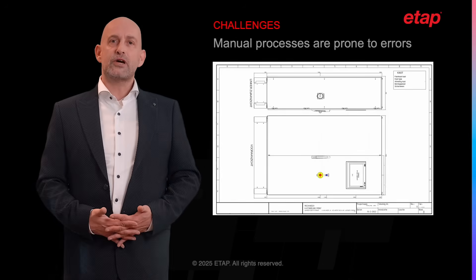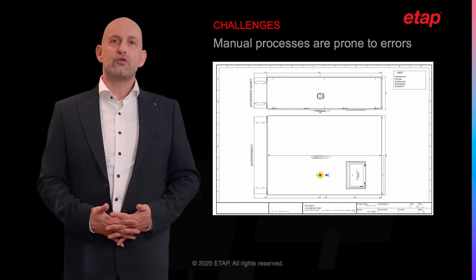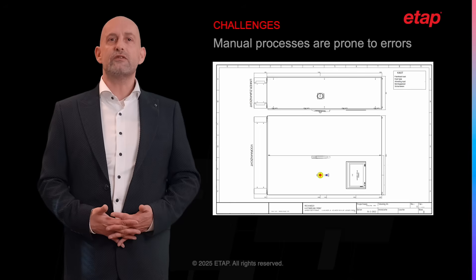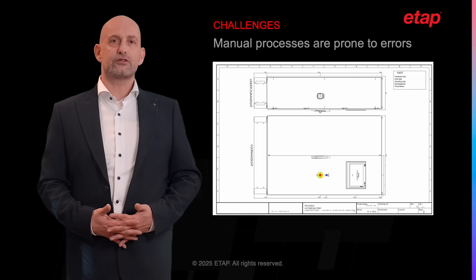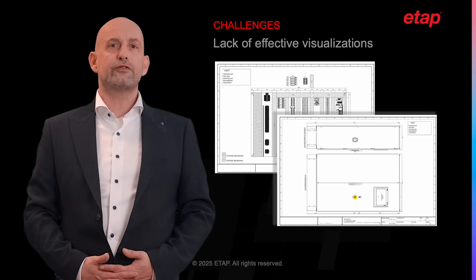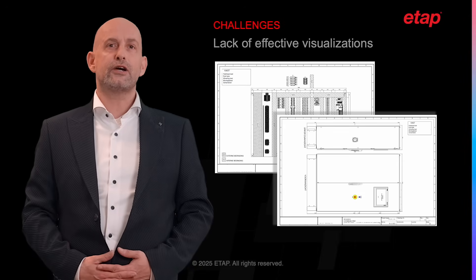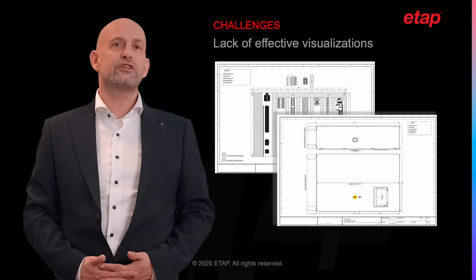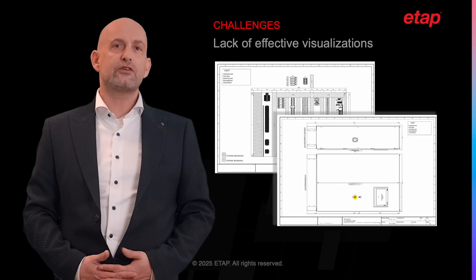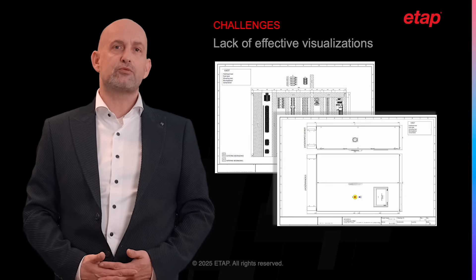Manual processes are inherently prone to errors, leading to costly reworks, delays and sometimes even system failures. 2D drawings and schematics often fail to provide a good understanding of the system, leading to misinterpretations and challenges in the assembly process.